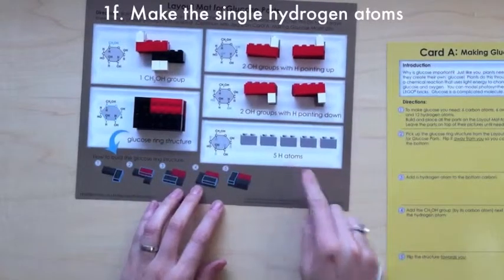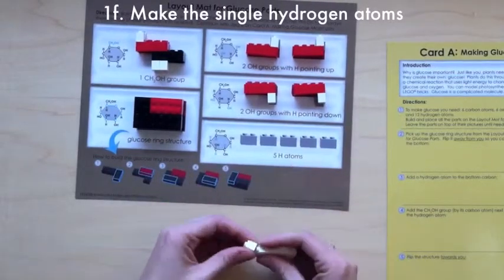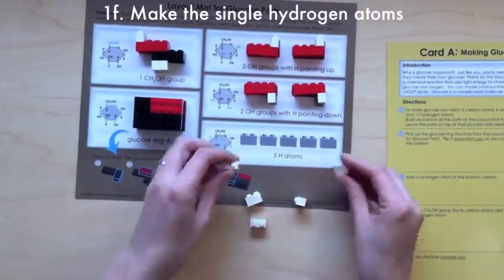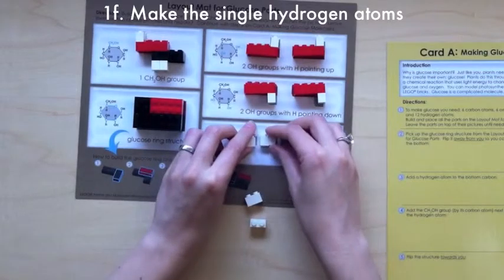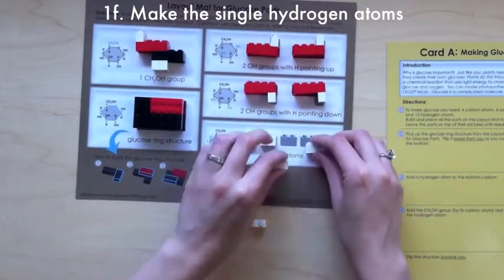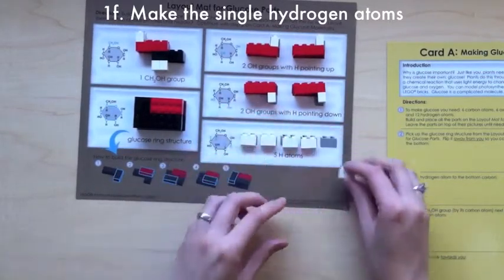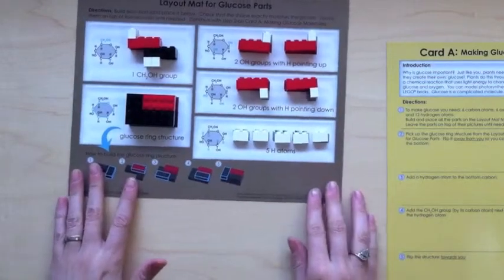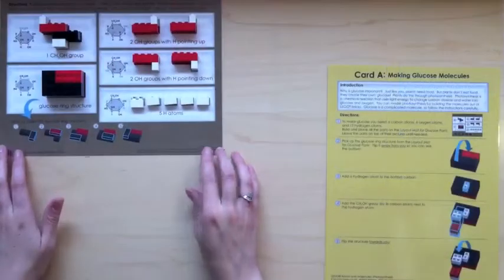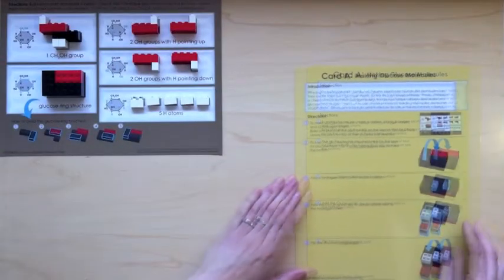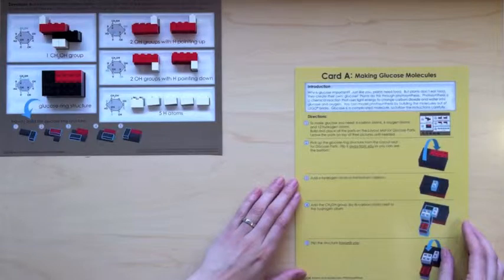The last thing you need is 5 single hydrogen atoms. Now you will use the glucose parts to make the glucose molecule. Follow the directions on Card A.